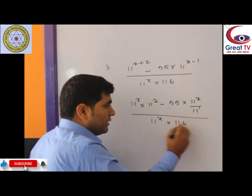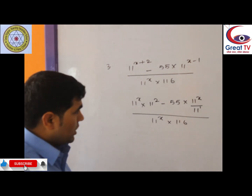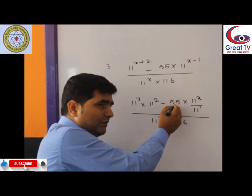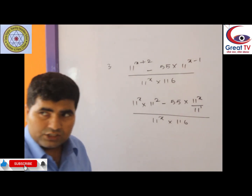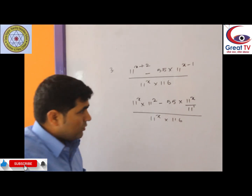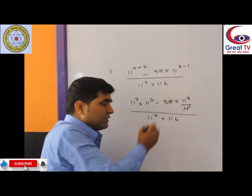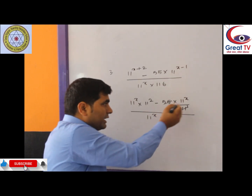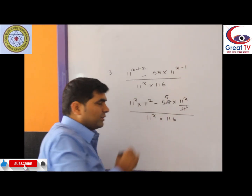One hundred sixteen. Here 55 is in numerator form and 11 is in denominator form, and we can cancel because 11 is a factor of 55. So 11 times 5 equals 55.